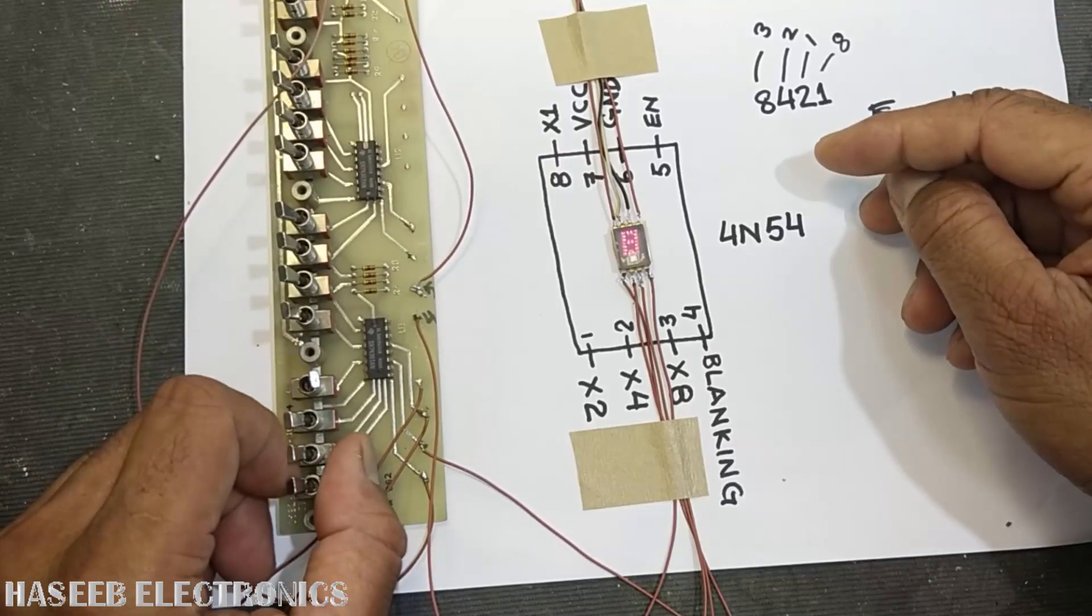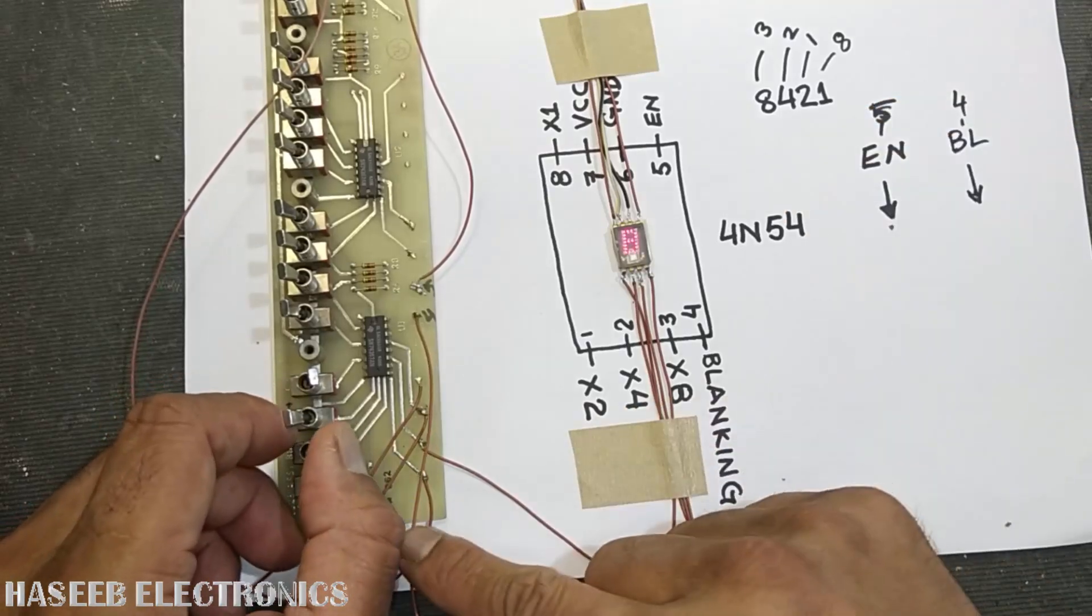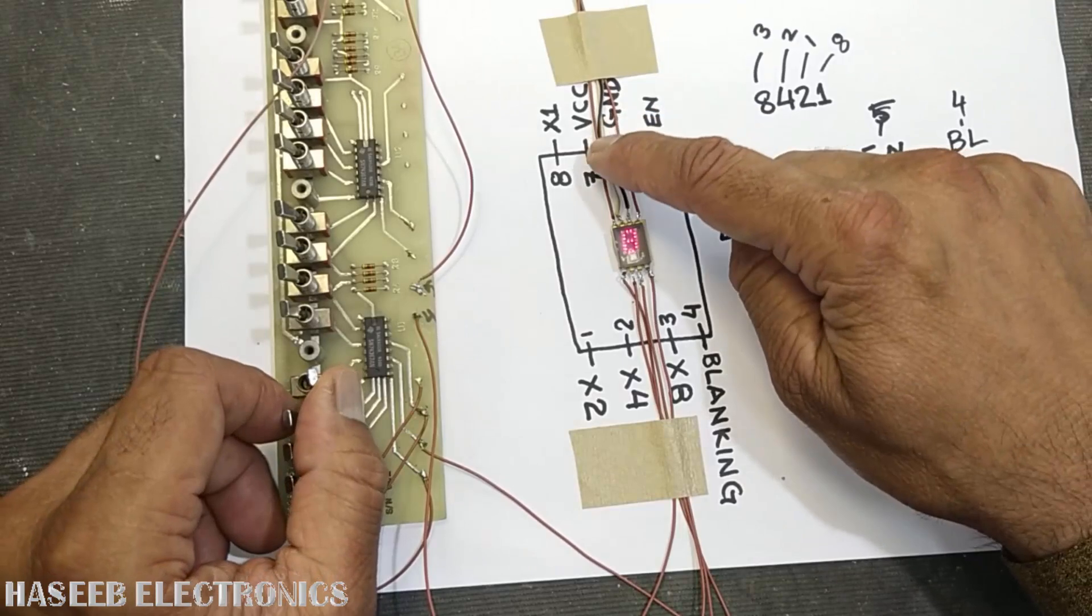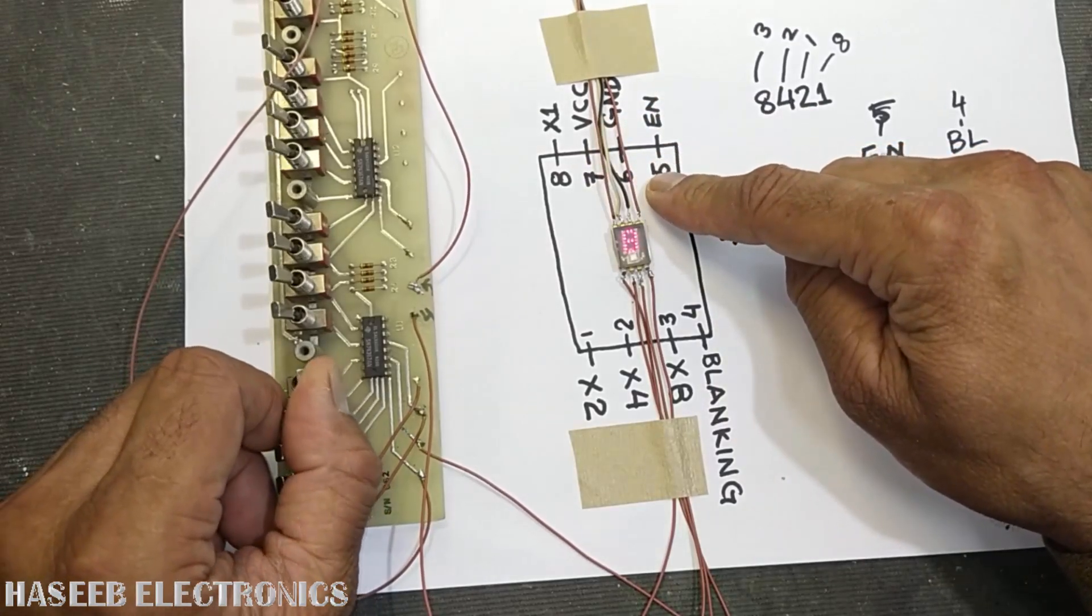So it is a TTL level display. VCC pin is pin number 7, and ground pin, that is pin number 6. Five volts are applied here.